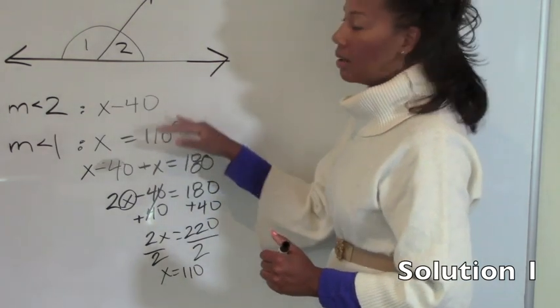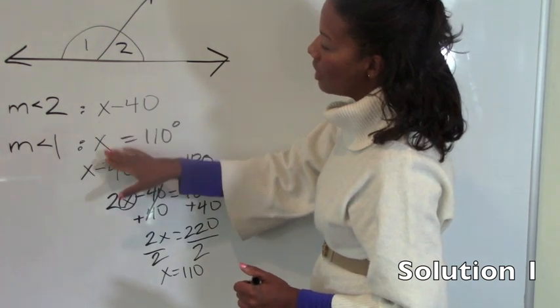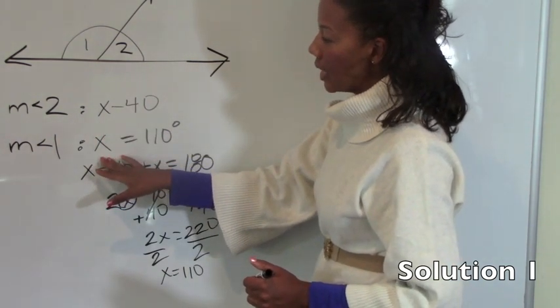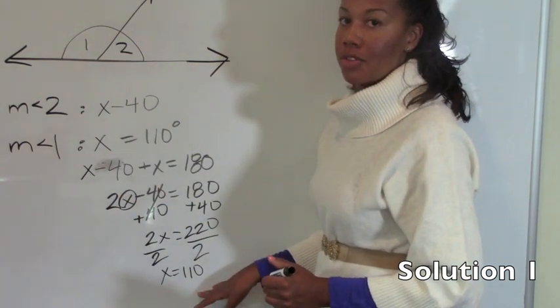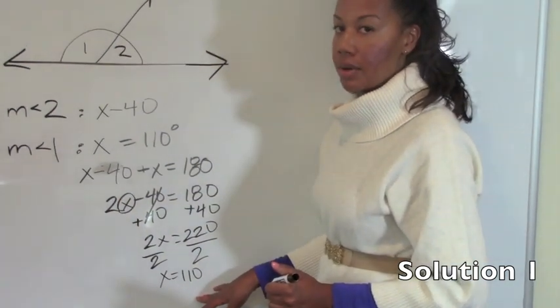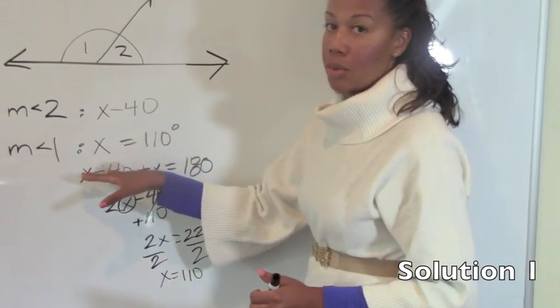If you wrote it differently and had the measure of angle 2 being x and the measure of angle 1 being x plus 40, you would have to add 40 to your final answer because you would have gotten that x is 70 degrees. So make sure you define your variable and you write down whatever it is so that you remember.